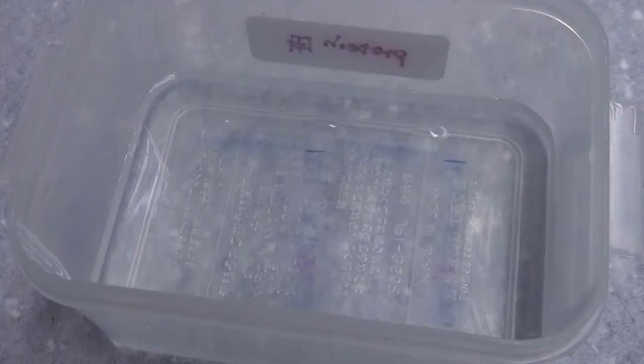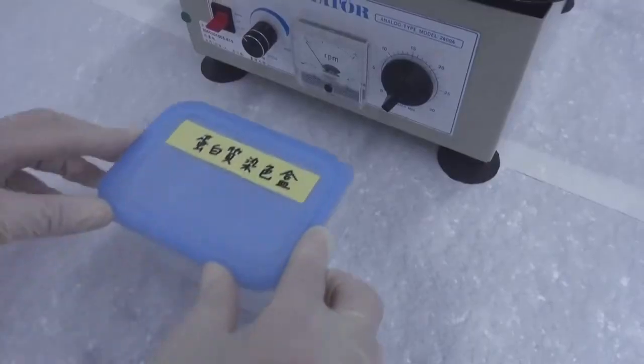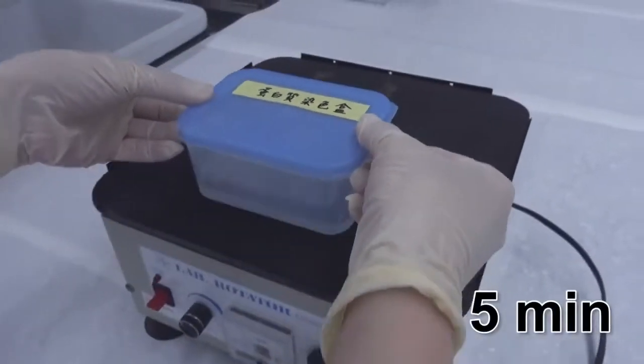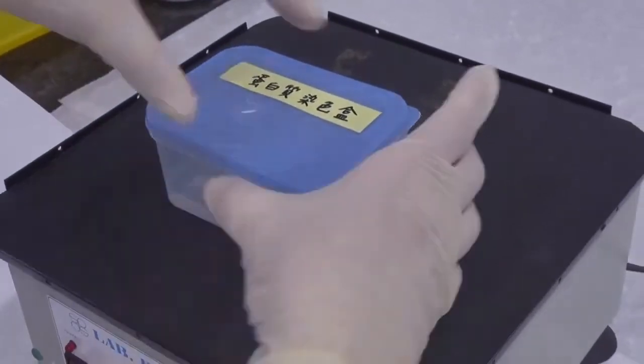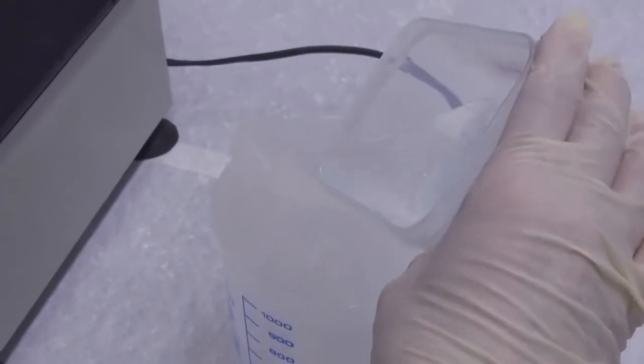You may see the gel slides down acceleratedly due to gravity. Put the lid on the box. Wash the gel with shaking for 5 minutes. Pour away the liquid waste.